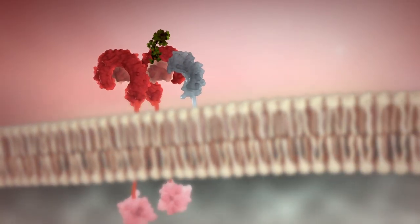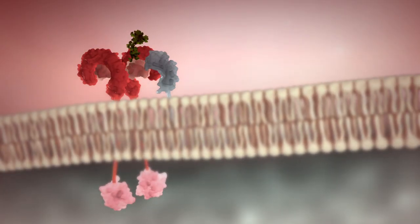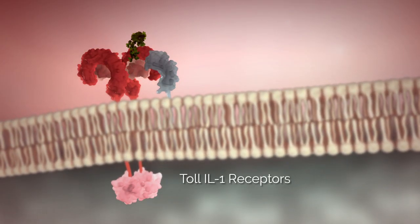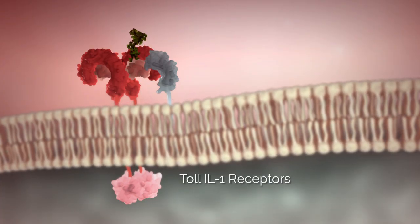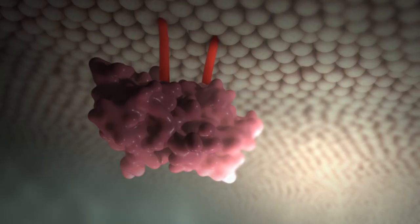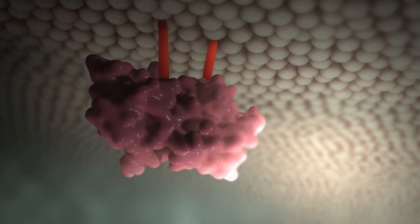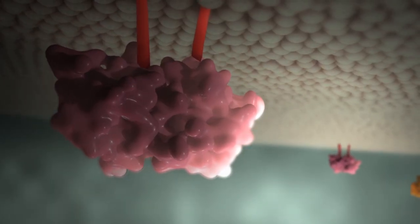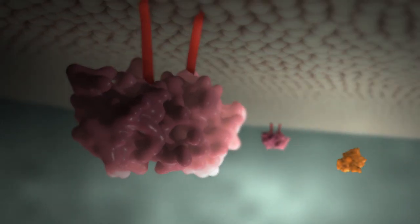The conformational change of the ectodomains initiates the dimerization of the cytoplasmic TOL-IL-1 receptor, or TIR domains. The TIRs provide a new scaffold that allows the recruitment of adapter proteins to form a post-receptor signaling complex.